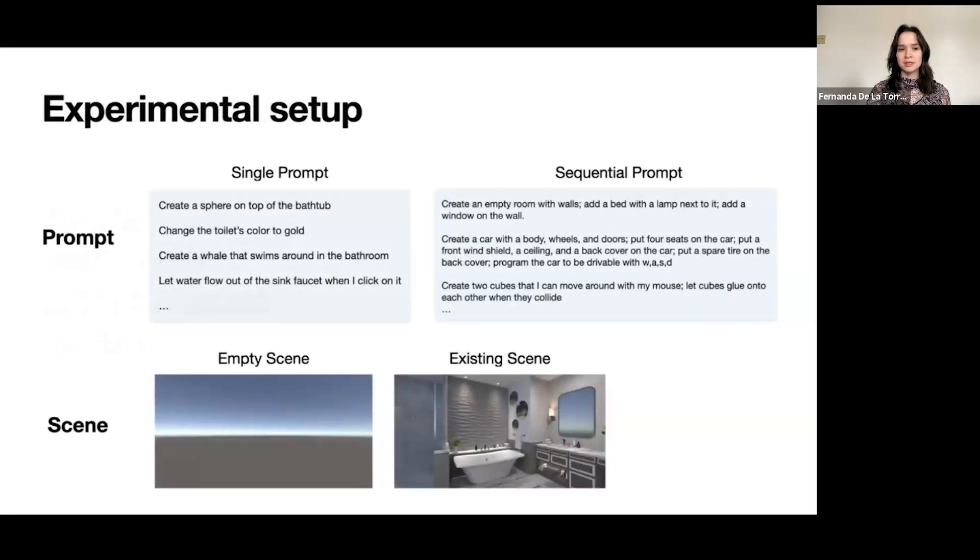Our experimental setup was to have two different types of prompts. The first type on the left were single prompts, and these are single commands that can be executed basically in one step. We also had sequential prompts. Rather than having a single prompt, we had multiple prompts that relied on the previous prompt in order to be executed. They're essentially sequential prompts that require sub-steps. On the scene side, we had two different setups. We had an empty scene where there were no objects and no scene hierarchy inside of Unity, and an existing scene where there was an existing object's existing room with an existing hierarchy. This is the case in which we would expect this scene analyzer to play more of a role.